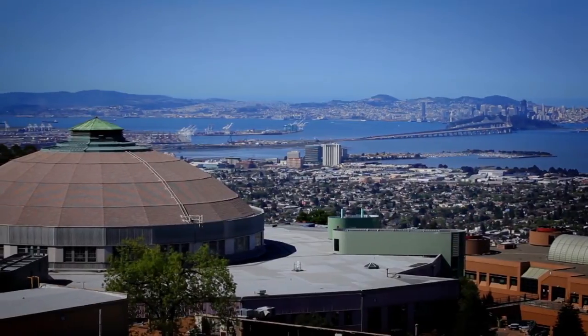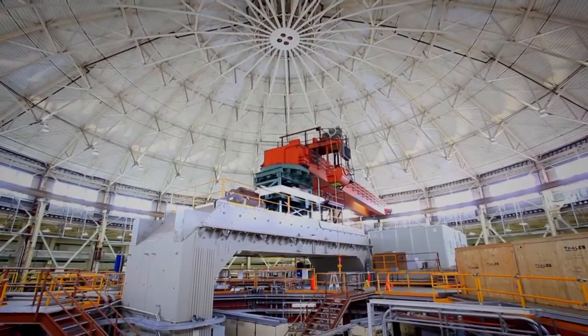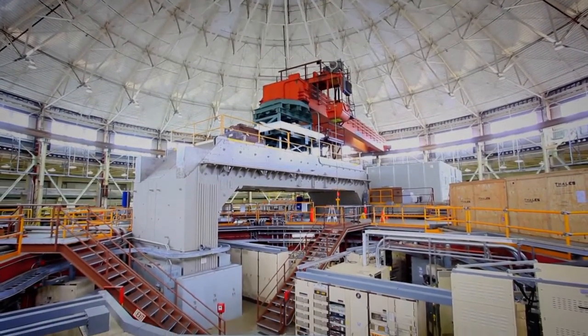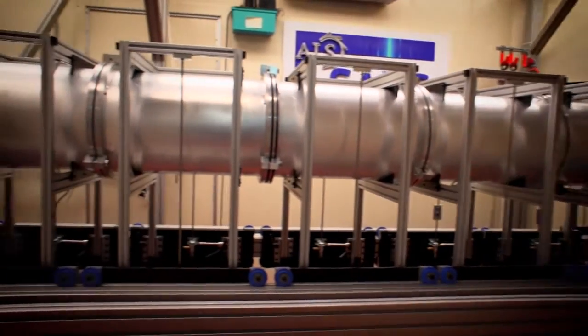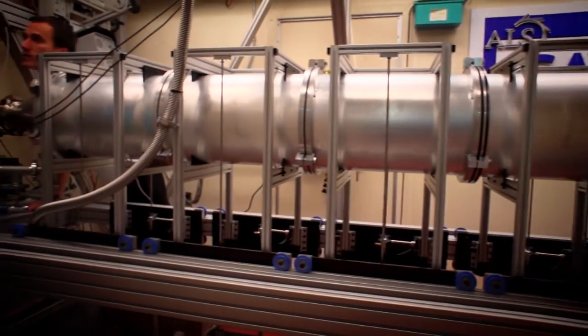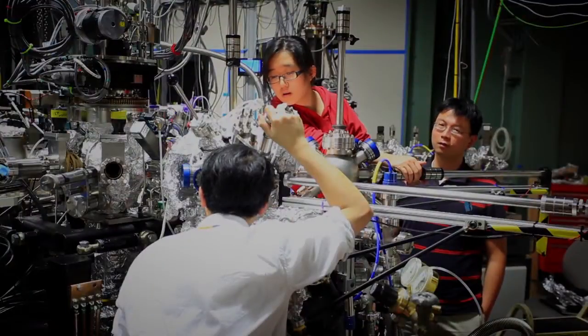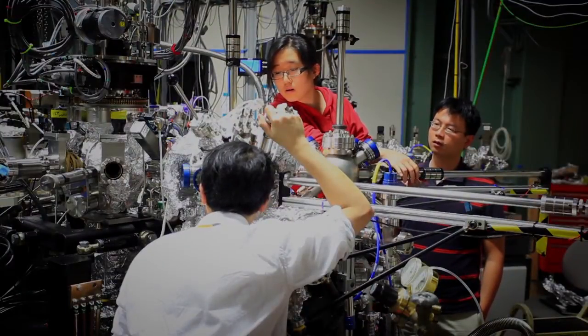First we go to the advanced light source and we look at them with the scanning transmission x-ray microscope. This microscope has a very high energy resolution and as a result of that we're able to see the lithium distribution in each particle at a specific state of charge of the battery.